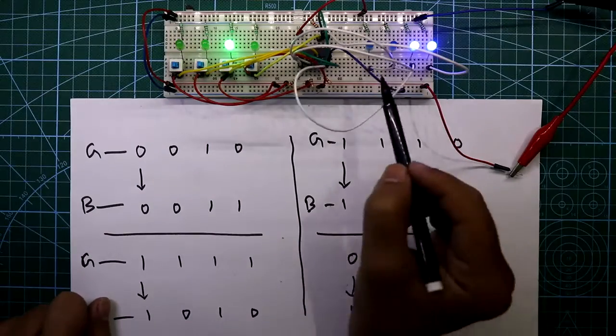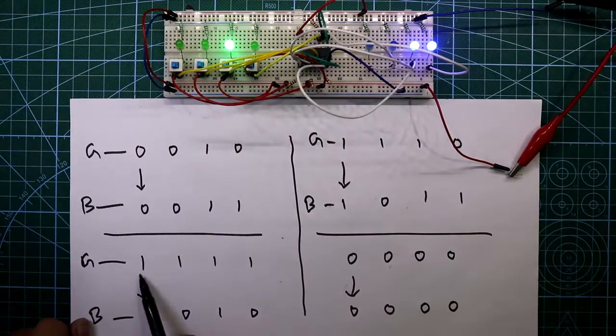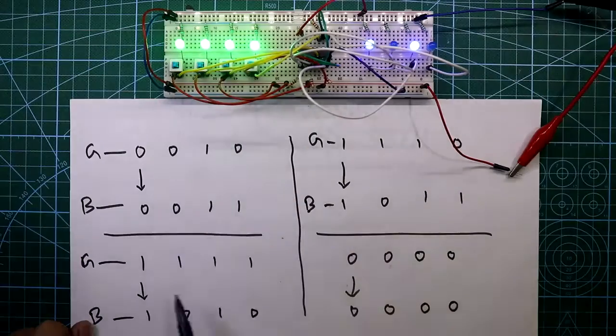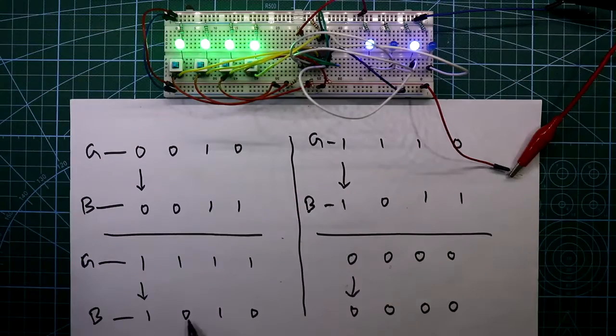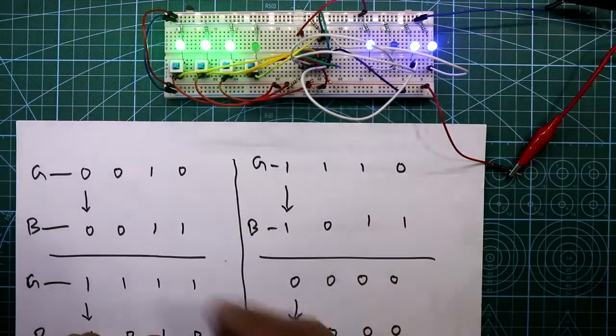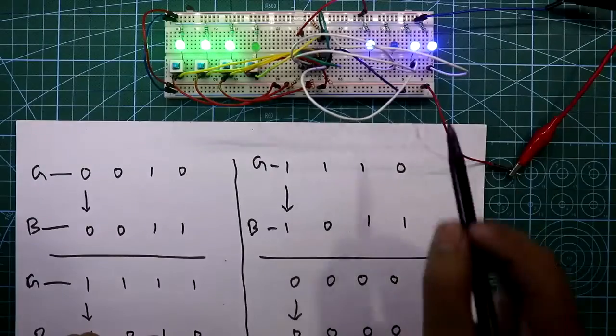Hello guys, in this video I am going to show you how to convert gray code to binary code using IC 7486. So let's get started.